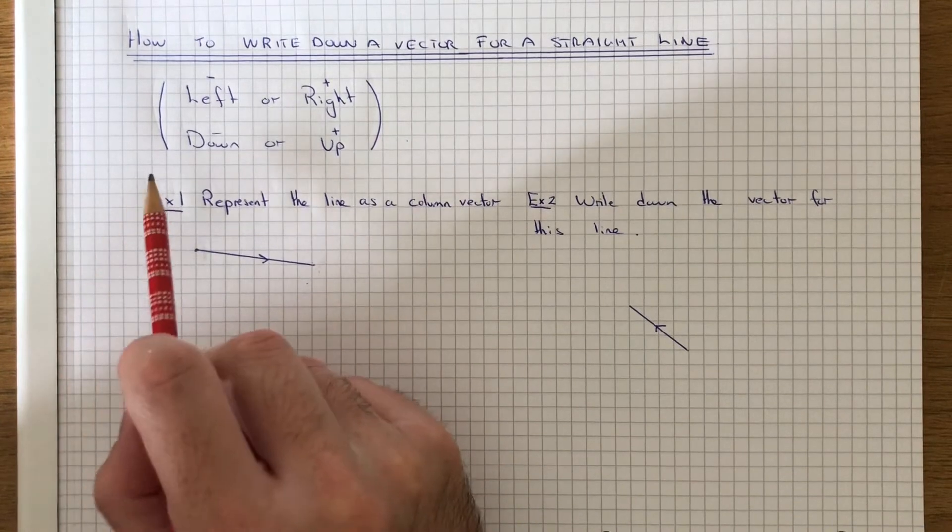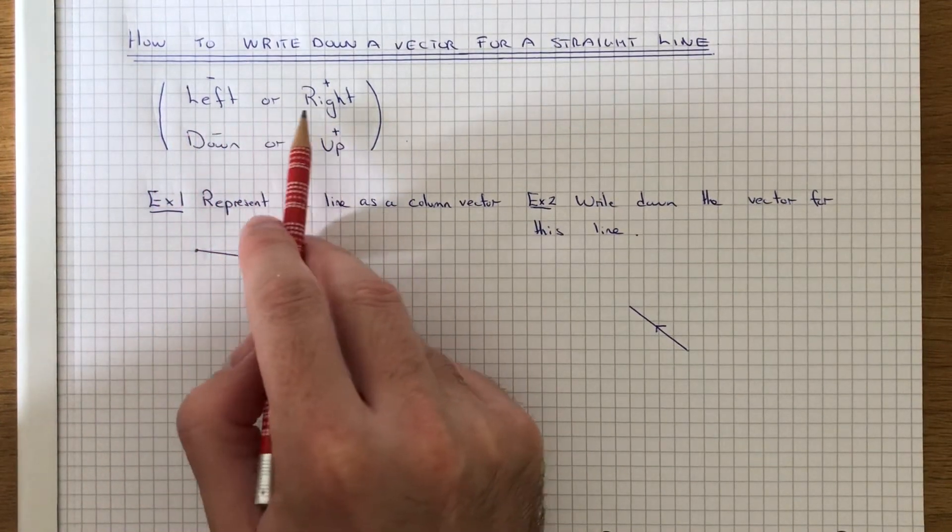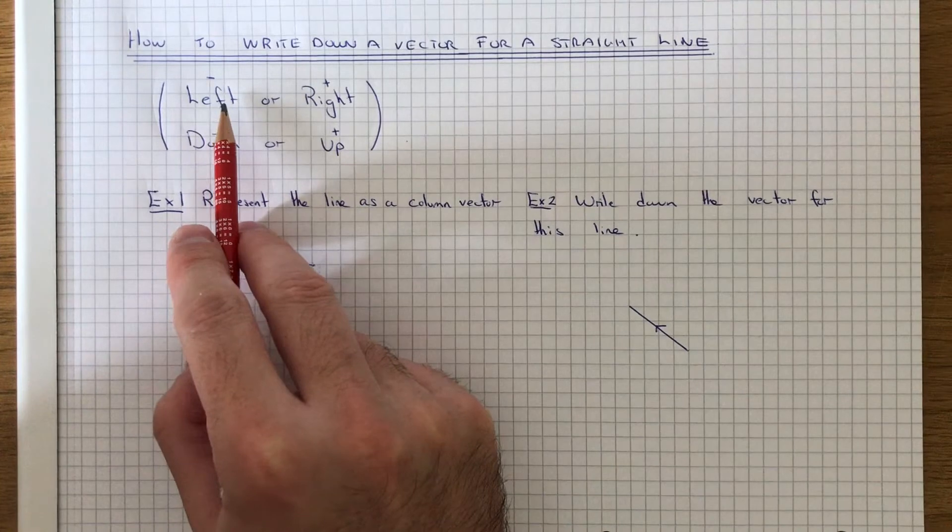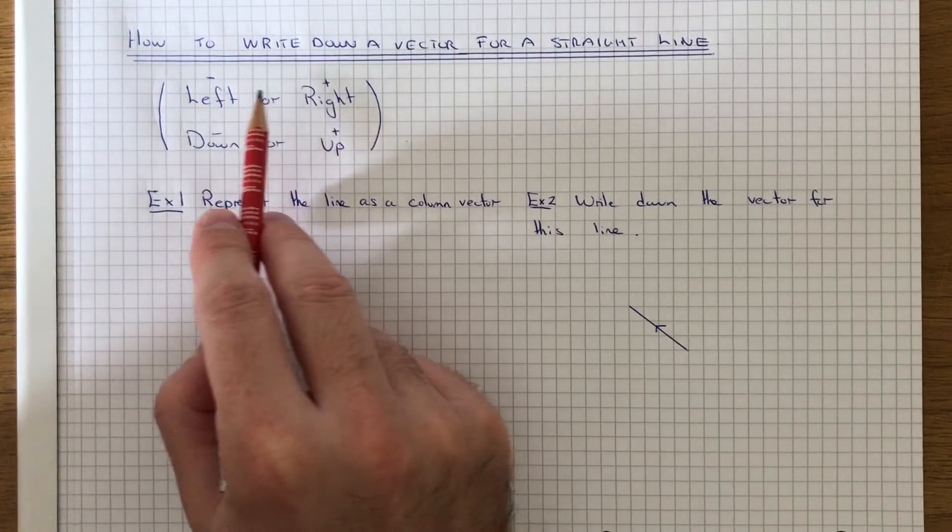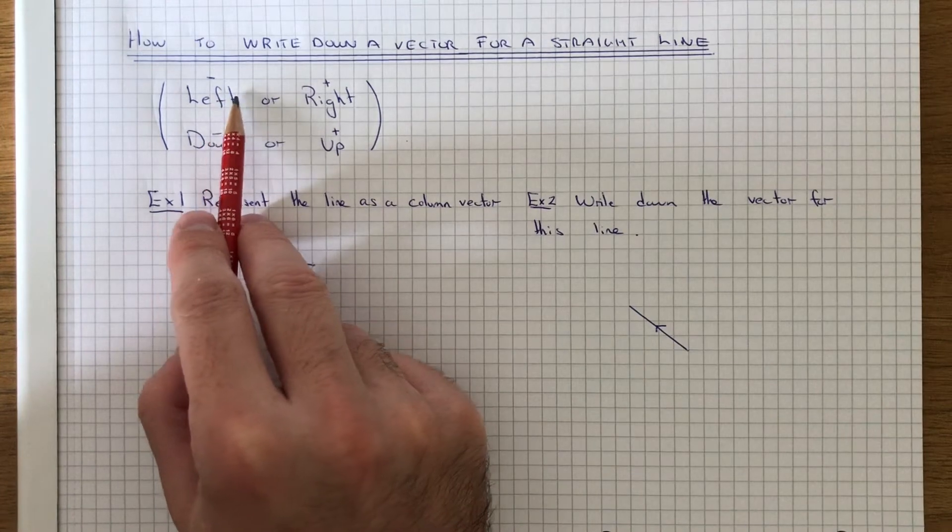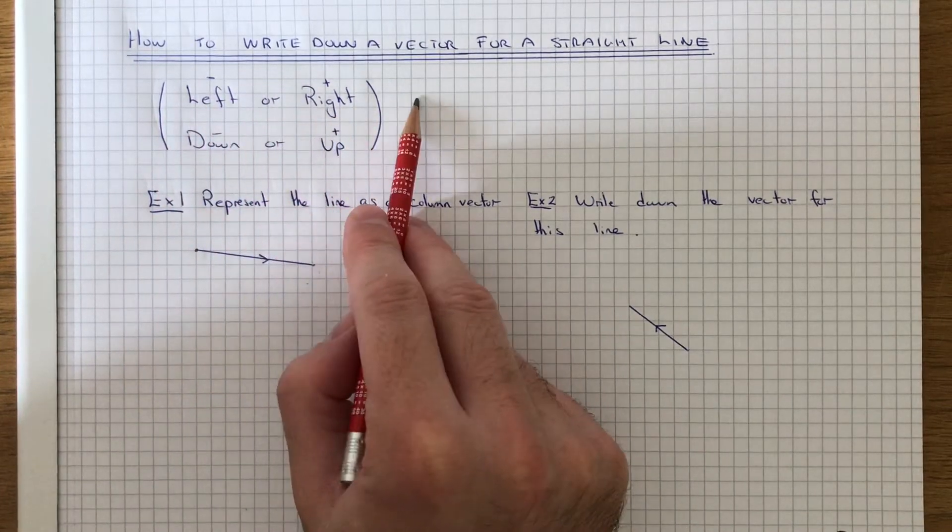First of all, you need to understand what the vector means. The top number on a vector will tell you if you're moving the point to the left or to the right. If the number at the top is negative, you move it to the left. If it's positive, you move it to the right.